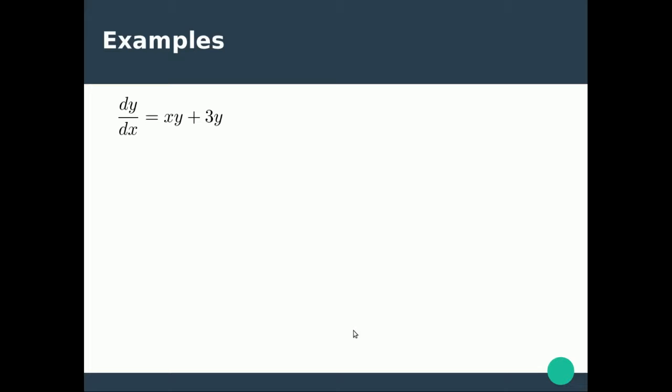Okay let's see some examples in action. We look at this one here—it doesn't necessarily look like it's a function of x multiplied by a function of y because there's no brackets here. But you might notice we can factorize out the y so we end up with this.